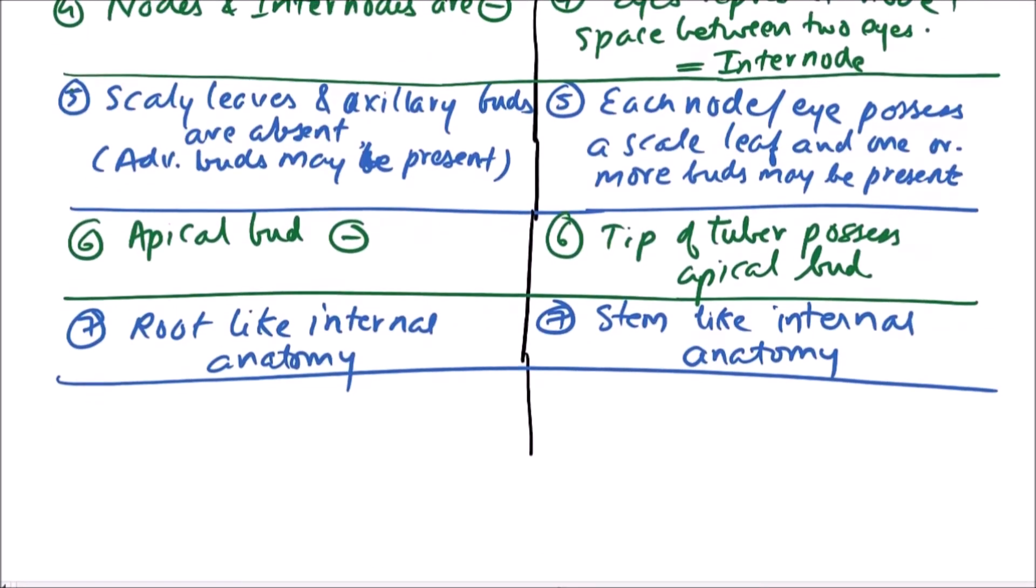Now the examples. Examples of root tuber include Mirabilis jalapa, commonly known as four o'clock plant.